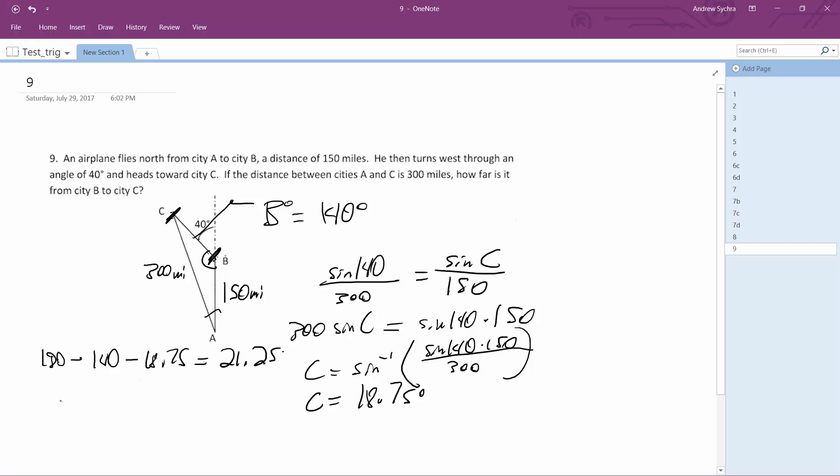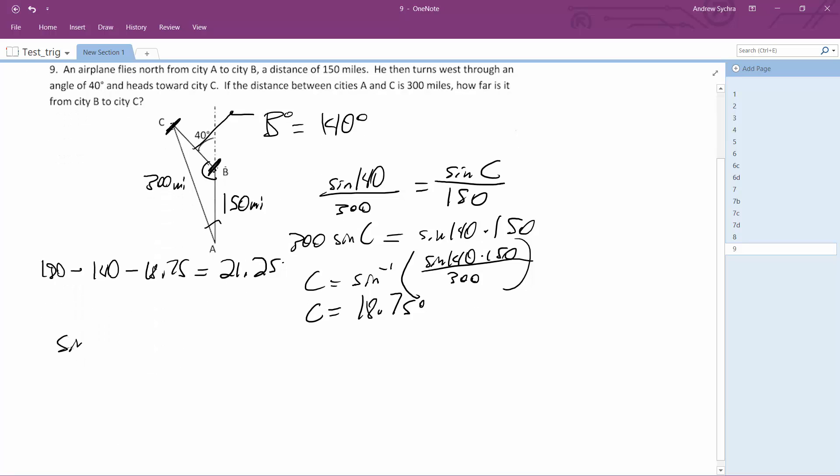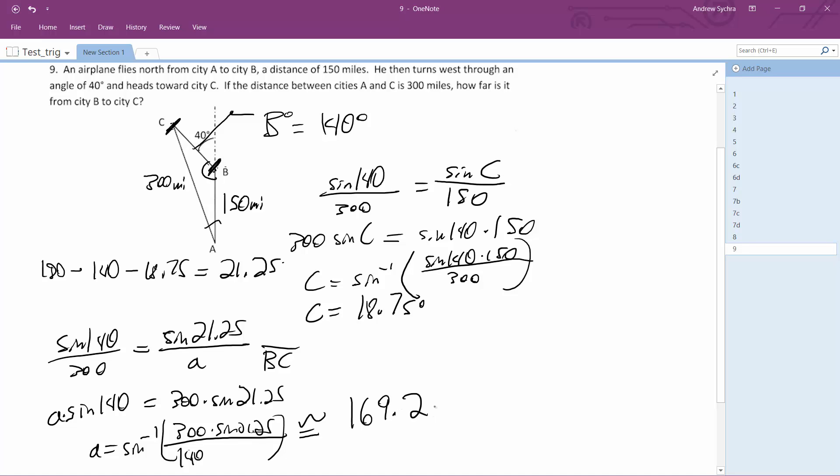So this is for side A, so now we can do this. So sine of 140 over 300 is equal to sine of 21.25 over the mysterious side, the distance between cities B and C. So A times the sine of 140 is equal to 300 times the sine of 21.25. So A is going to be equal to 300 times the sine of 21.25 over sine of 140, which equals 169.17, so I'll just call it 169.2 miles.